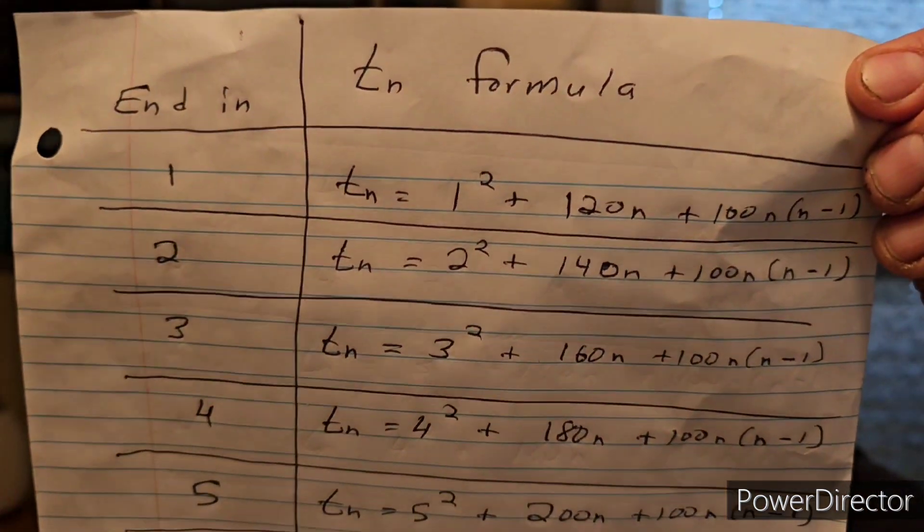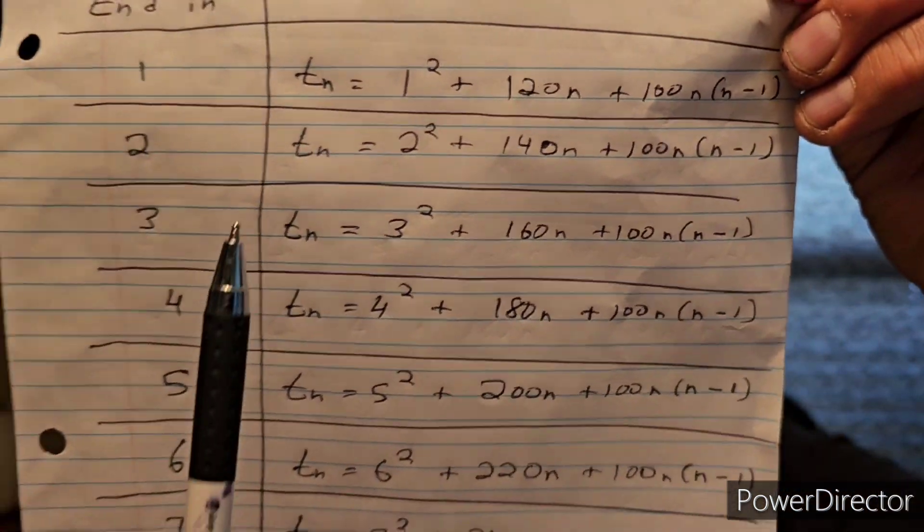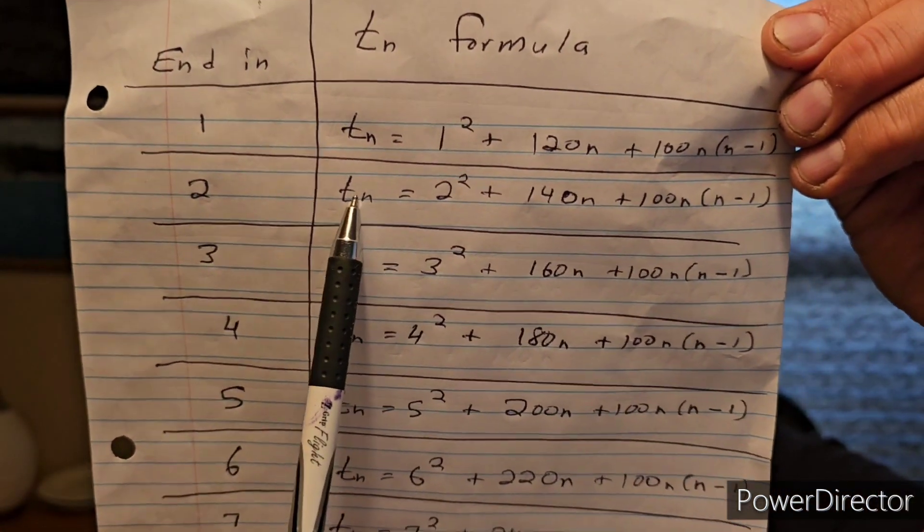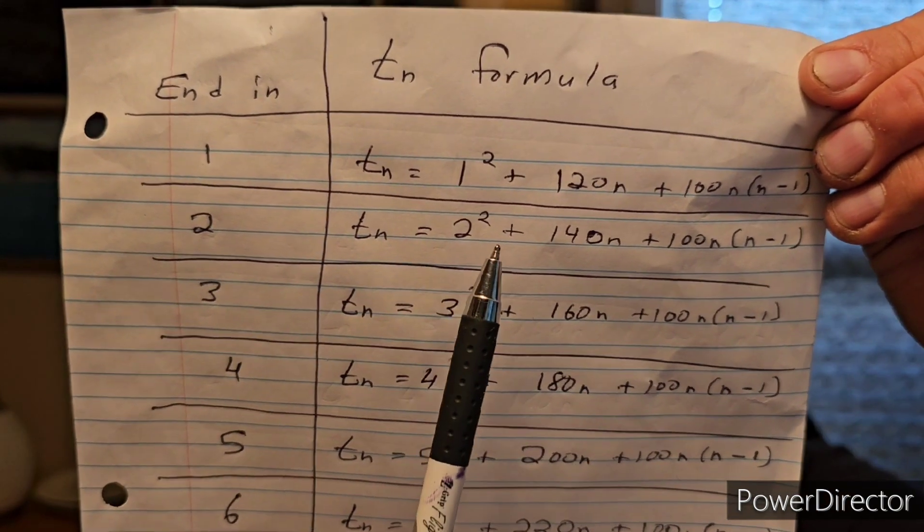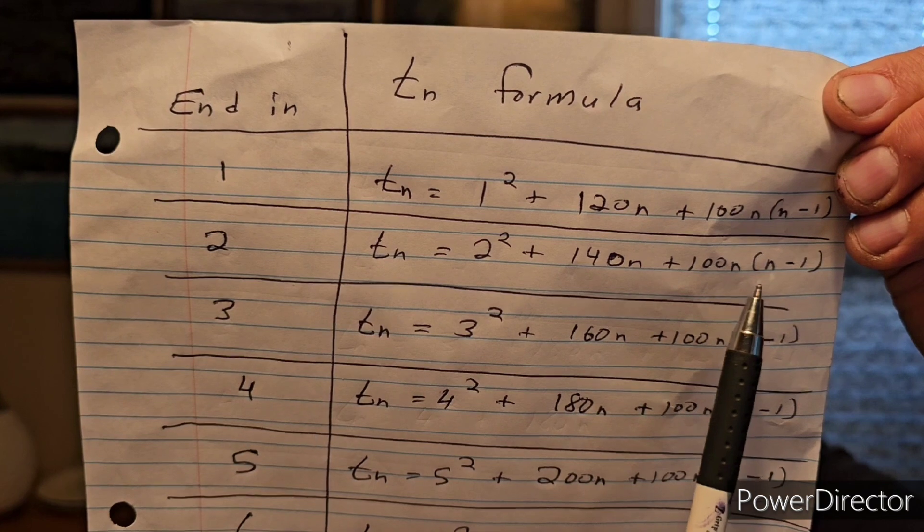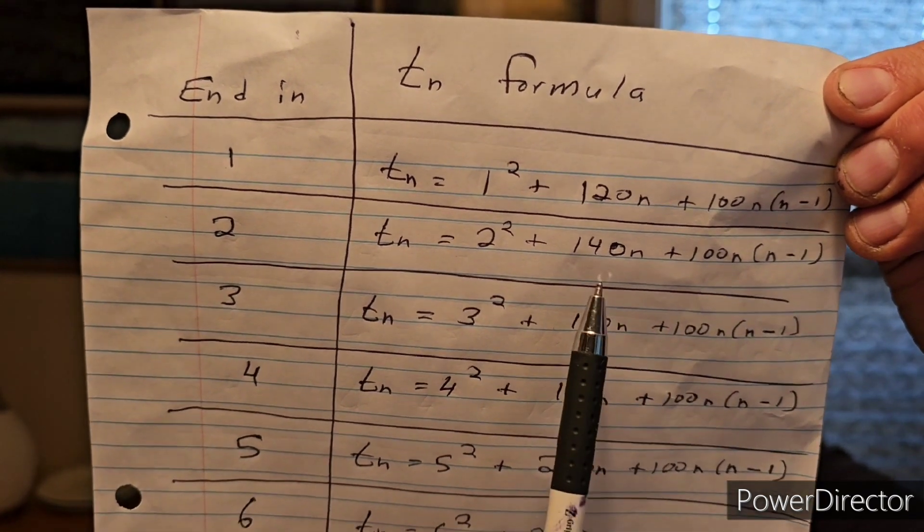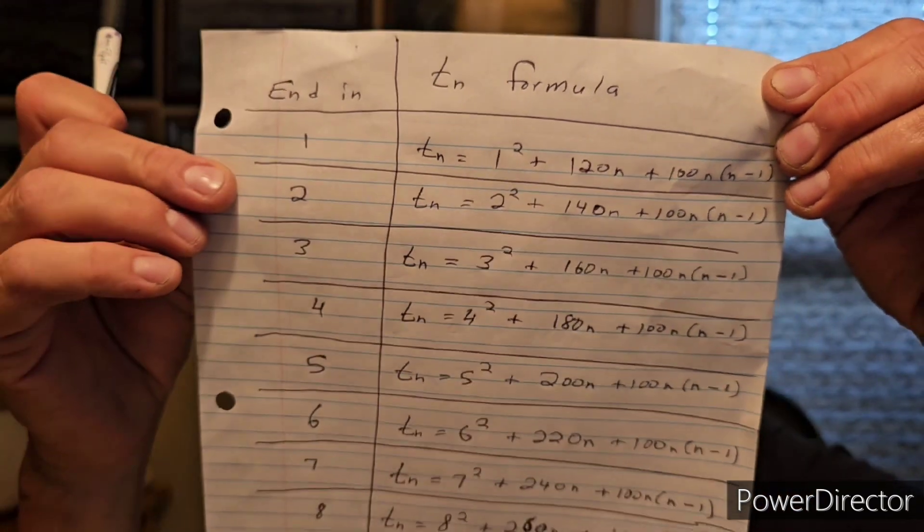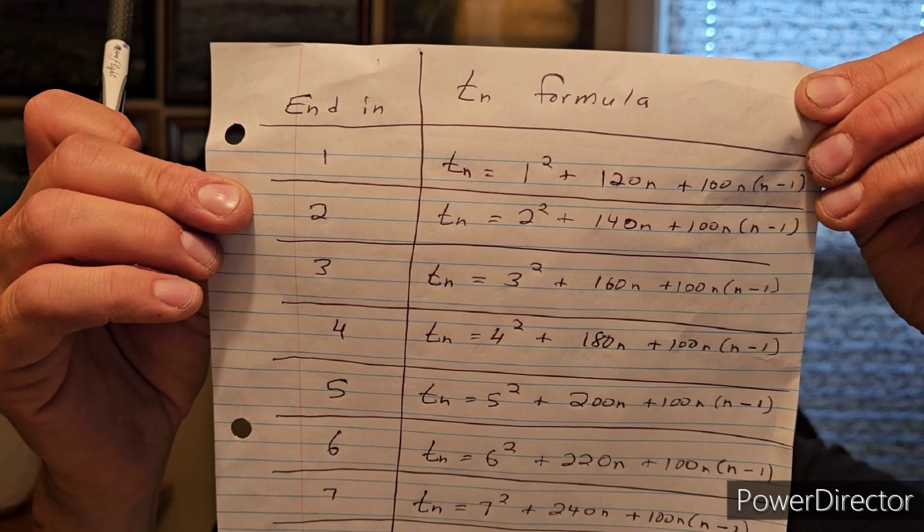Now, let's do a number ending in 2. Let's do 32. So that means it would be T3. So it would be 2 squared plus 3 times 140, 420 plus 3 times 2 times 100, 600 plus 420 plus 4. And yes, that is 1024. That's 32 squared.